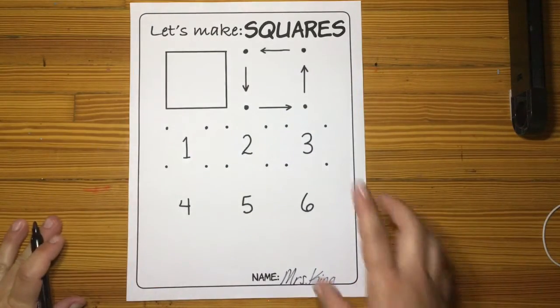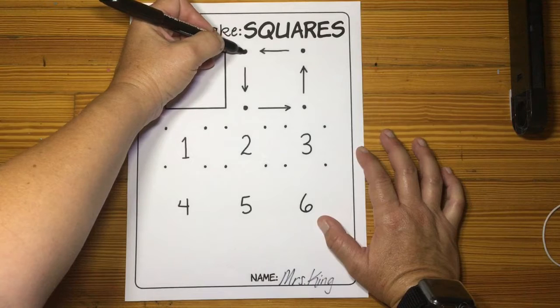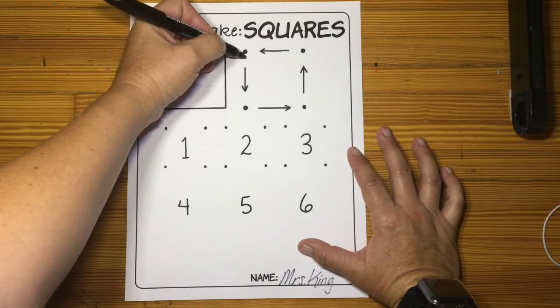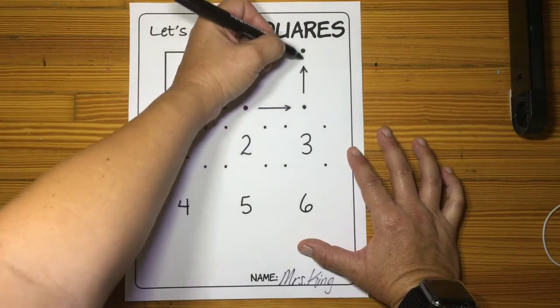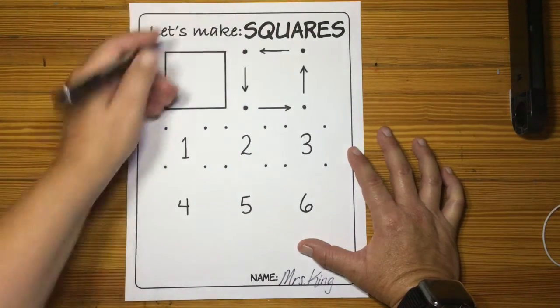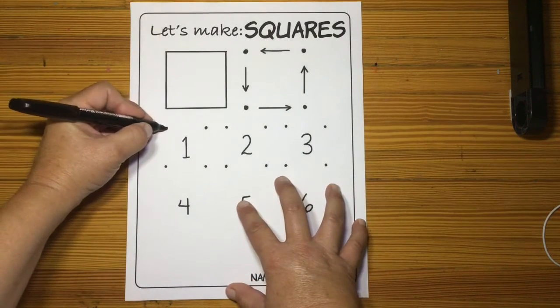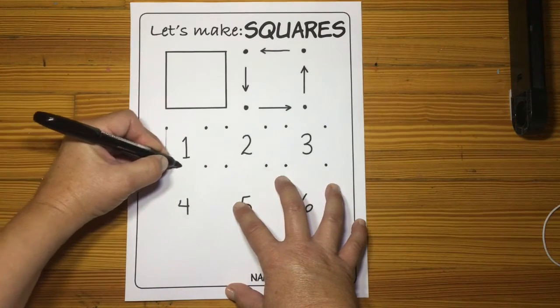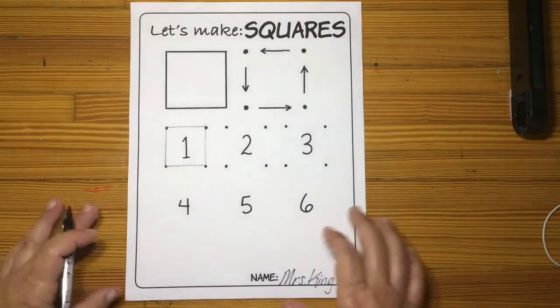Okay, let's start, how about right here? The arrow points down, then to the right, back up, and to the left. Okay, let's start with number one. Down, to the right, back up, and to the left. I've got a nice square.